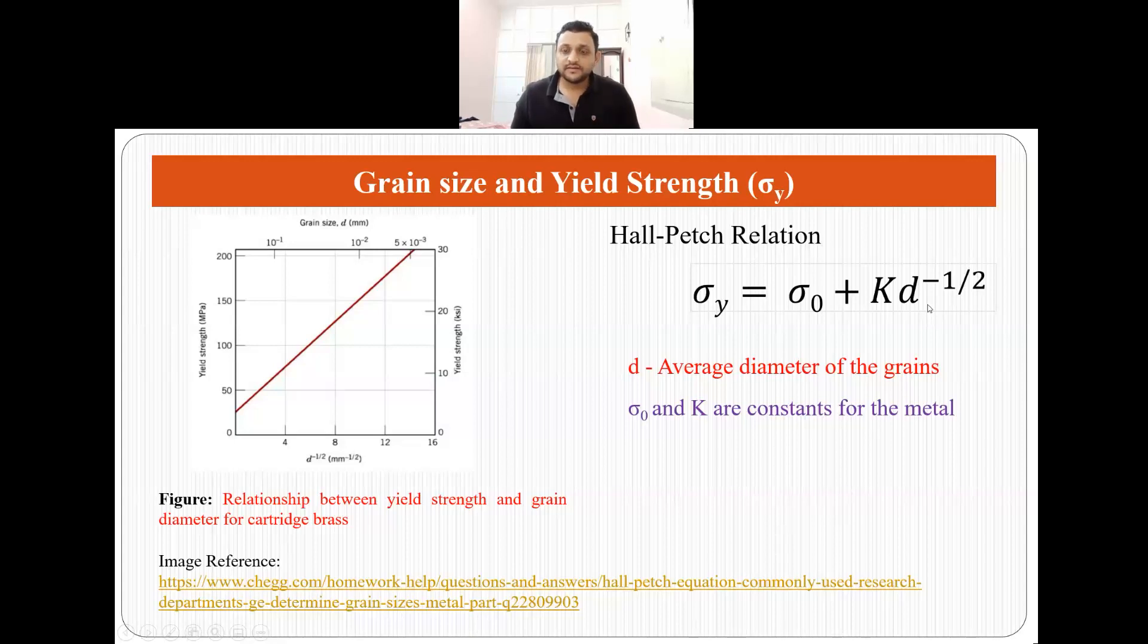Lesser the grain size, more will be the yield strength of the material. That is what we mean by Hall-Petch relation, and this is the figure which shows the relationship between yield strength and grain diameter for cartridge brass. You can see that as we are decreasing the grain size, the yield strength of this cartridge brass is increasing. So this is all I have about the surface defects.